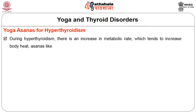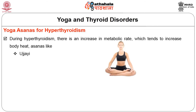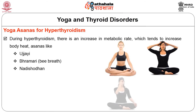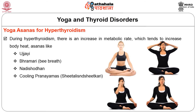During hyperthyroidism, there is an increase in metabolic rate which tends to increase body heat. Breathing asanas like Ujjayi, Bhramari, and Nadi Shodhana, and cooling pranayamas like Sheetali and Sheetkari are effective in bringing the metabolic rate back to normal.